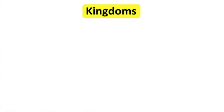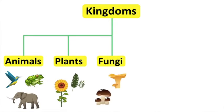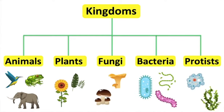Living things can be classified into five groups called kingdoms. Each kingdom contains organisms that have similar characteristics. The five kingdoms are: animals, plants, fungi, bacteria, and protists. Animals are multicellular organisms that feed on other living things. Plants are multicellular organisms that make their own food through the process of photosynthesis.